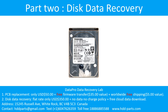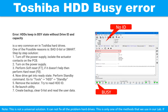Part 2 — Disk Data Recovery. Toshiba hard drives keep in a busy state without drive ID and capacity — it is a very common error in Toshiba hard drives. One of the possible reasons is bad J-Dist or SMART. Step-by-step solution: Turn off the power supply. Isolate the actuator contacts on the PCB. Turn on the power supply. Perform Soft Reset or Hard Reset. Now the drive gets into ready state. Perform Standby command.